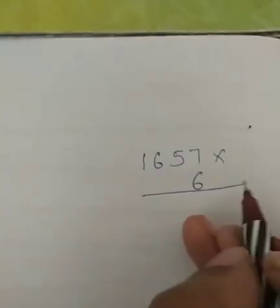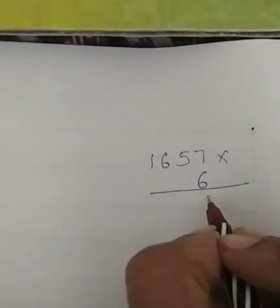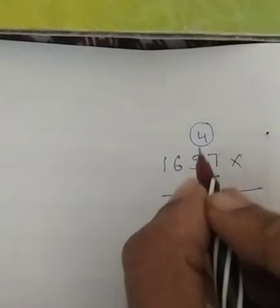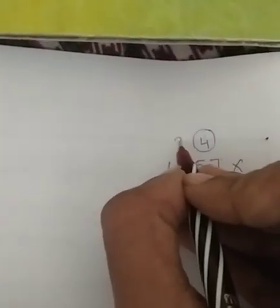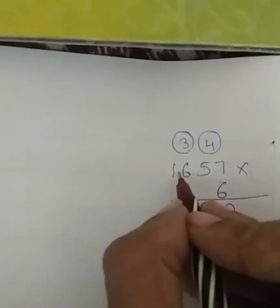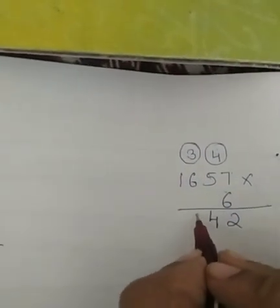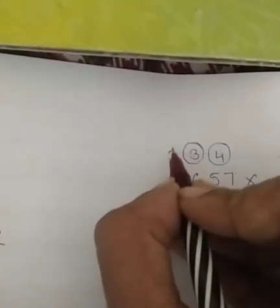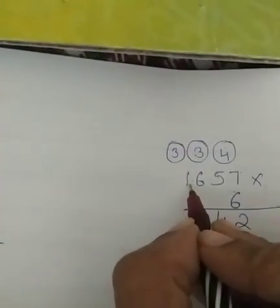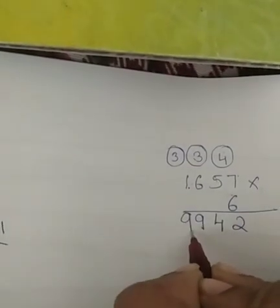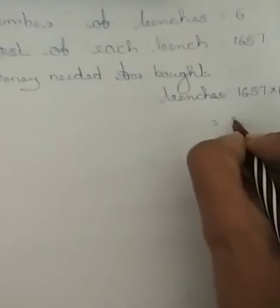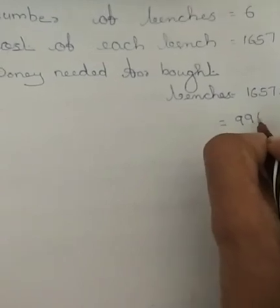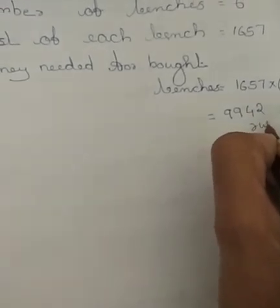Listen here: 6 into 7 is 42 — write 2 here and 4 as reminder. 6 into 5 is 30; 30 plus 4 is 34 — write 4 here and 3 as reminder. 6 into 6 is 36; 36 plus 3 is 39 — write 9 here and 3 as reminder. 6 into 1 is 6; 6 plus 3 is 9. This is the answer: 9,942 rupees.